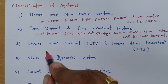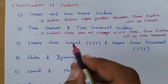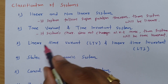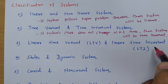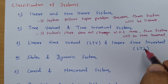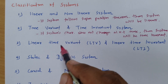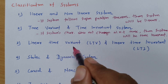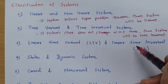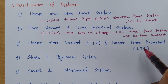Now, if a system is both linear and time invariant, then the system will be a linear time invariant system, also known as an LTI system. If a system follows both linearity as well as time invariance, it will be classified as an LTI system.